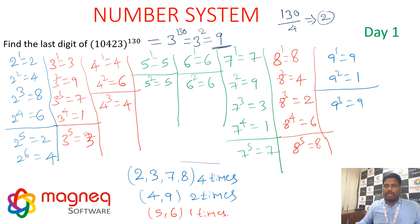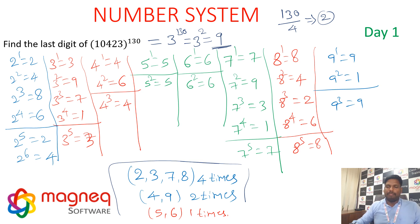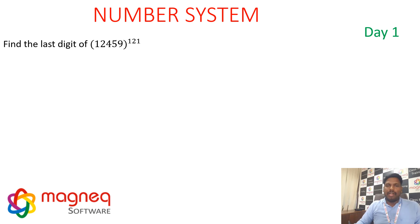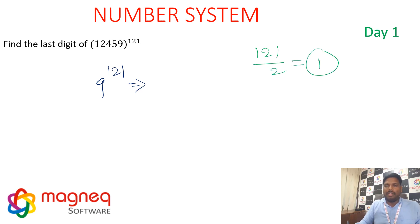Remember: digits 2, 3, 7, 8 repeat after 4 powers; digits 4, 9 repeat after 2 powers; digits 5, 6 always end the same. Next example: find the last digit of 12,459 to the power 121. Unit digit is 9, which repeats after 2 powers. 121 ÷ 2 gives remainder 1, so 9¹ ends in 9. Therefore, 12,459^121 ends in 9.